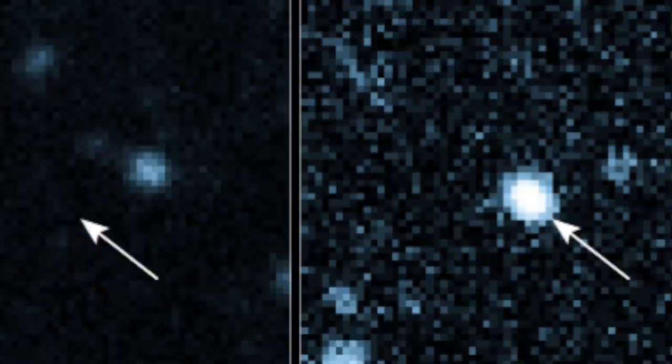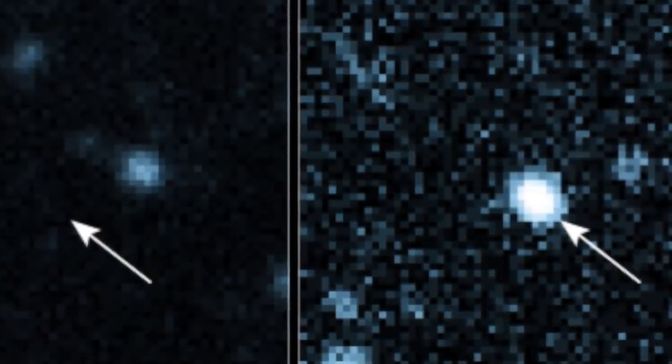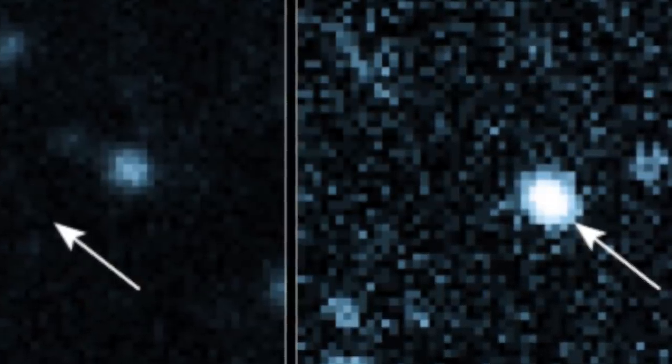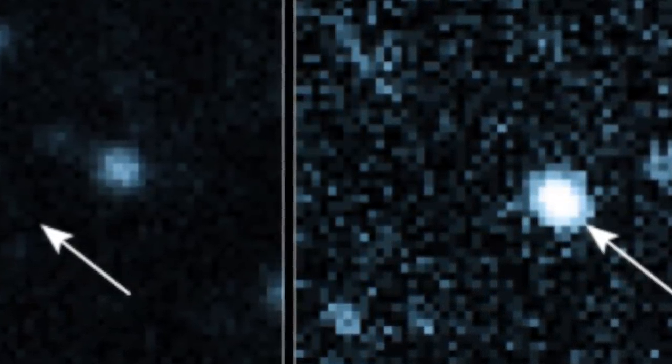Researchers were convinced that they had just witnessed this particular black hole having two separate feeding episodes. It feasted on gas, burped and napped, and then it repeated these events once more in the same sequence.